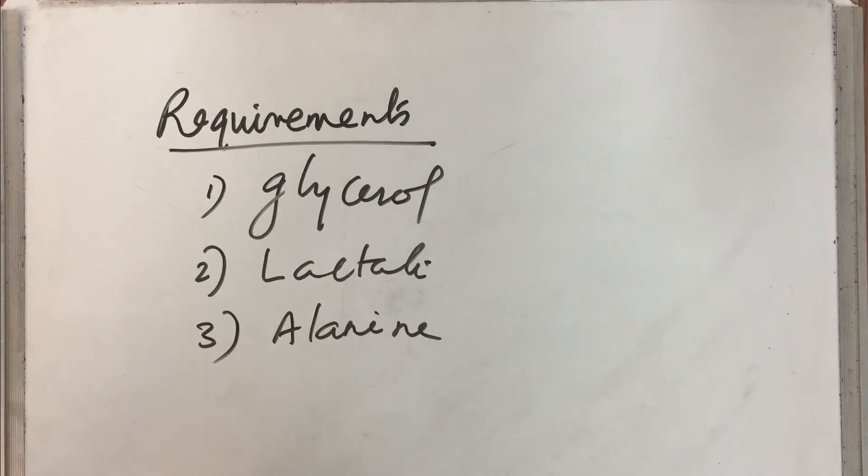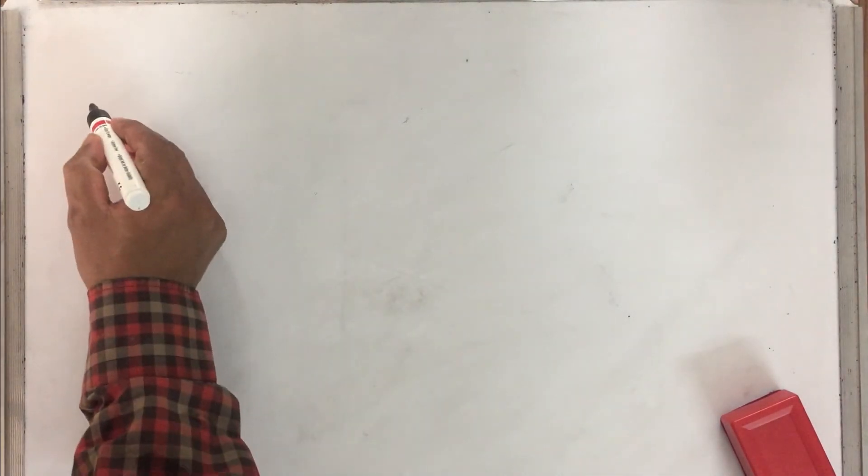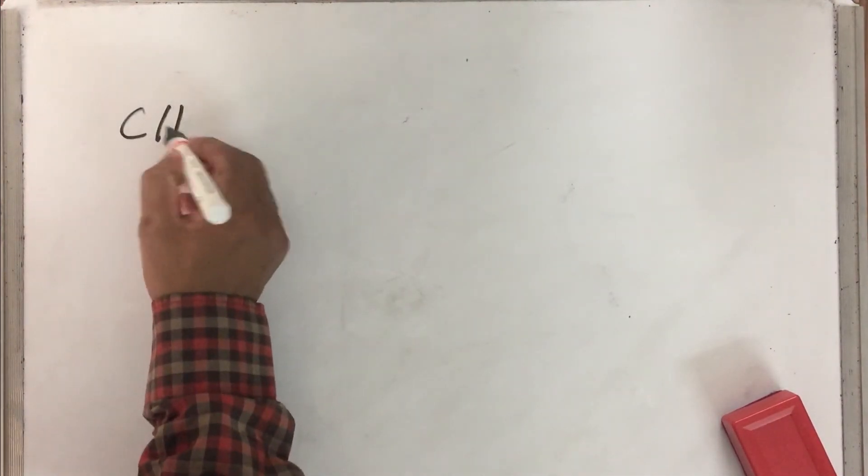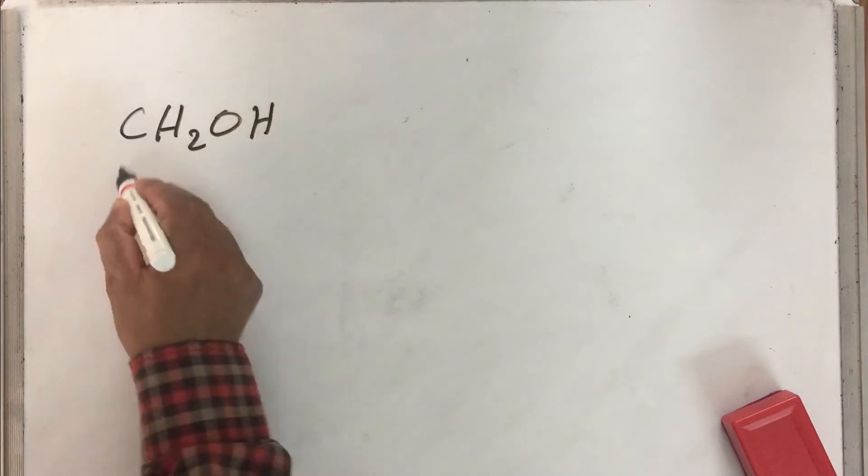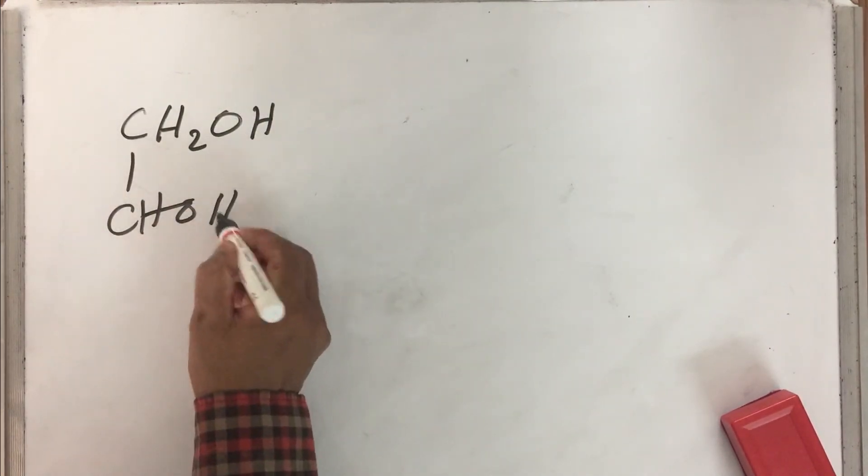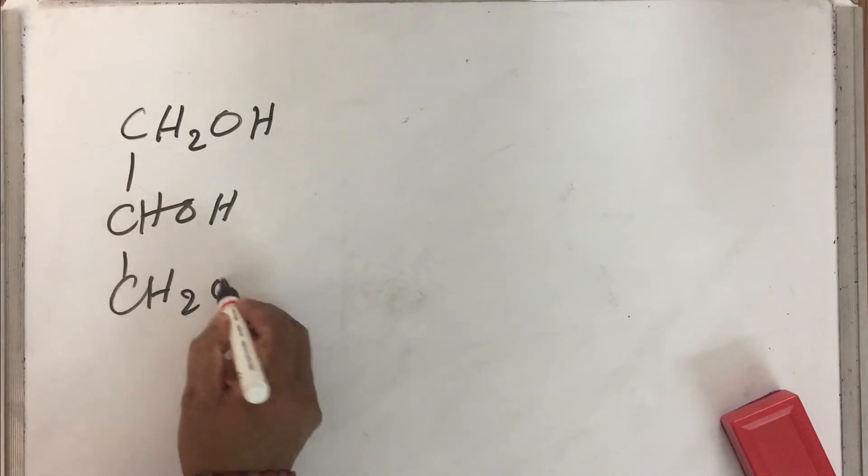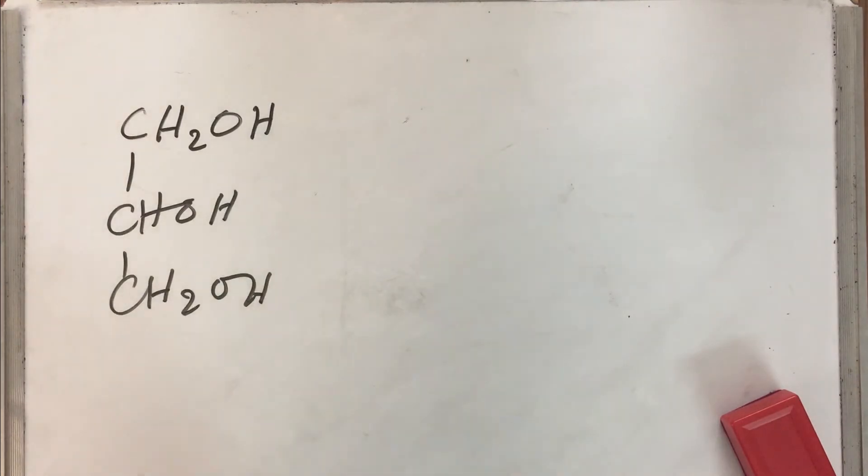Let us take first of all glycerol. Glycerol, as you know, is an alcohol. So the structure of glycerol is CH2OH, CHOH, CH2OH - this is the structure of glycerol.